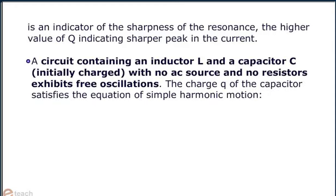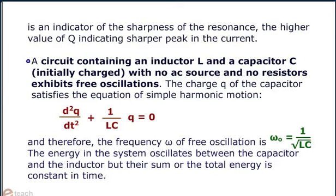A circuit containing an inductor L and a capacitor C initially charged with no AC source and no resistors exhibits free oscillations. The charge Q of the capacitor satisfies the equation of simple harmonic motion as shown. And therefore, the frequency of free oscillations is 1 by root LC. The energy in the system oscillates between the capacitor and the inductor, but their sum or the total energy is constant in time.